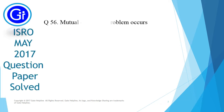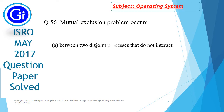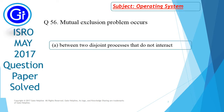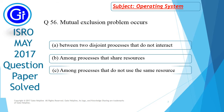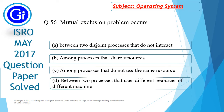Question number 56 is: mutual exclusion problem occurs — and the options are: option a, between two disjoint processes that do not interact; option b, among processes that share resources; option c, among processes that do not use the same resource; and option d, between two processes that use different resources of different machines.